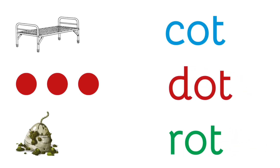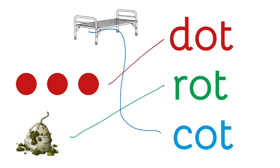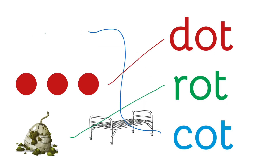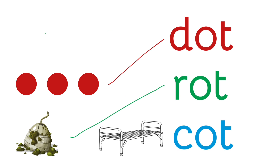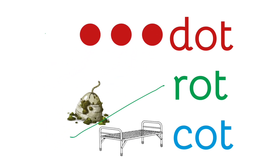Now let's see if you can match the pictures with the words. Use your finger to draw a line. Cot. Dot. Rot. Did you get those? I hope so. Cot. Dot. Rot.